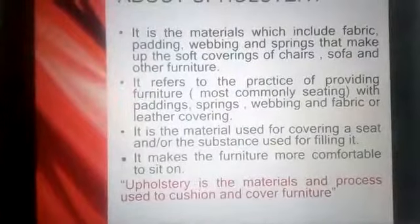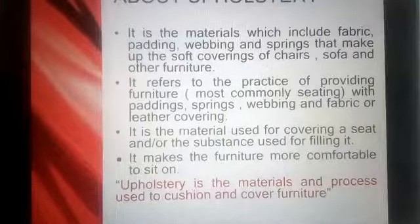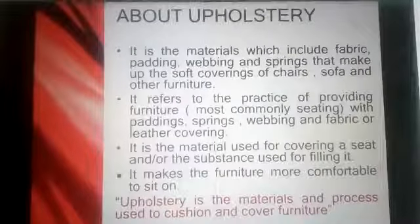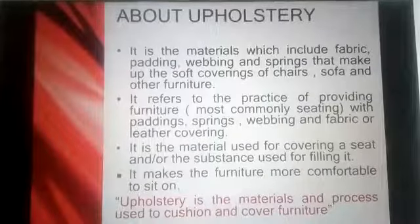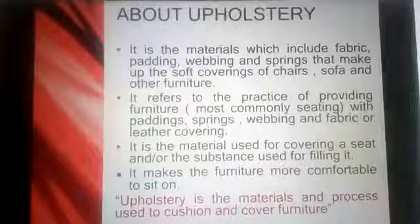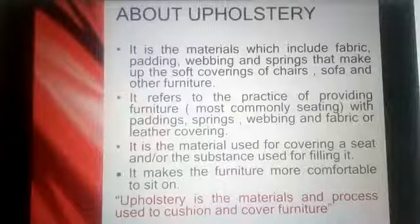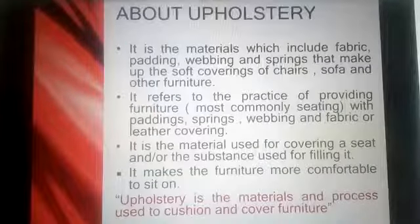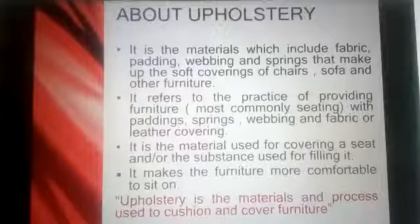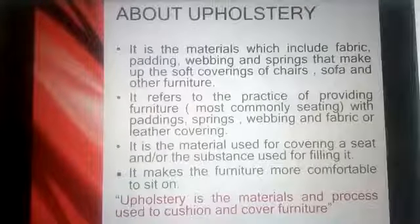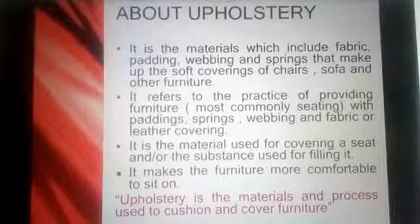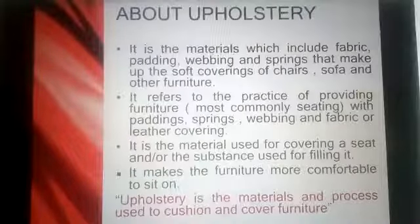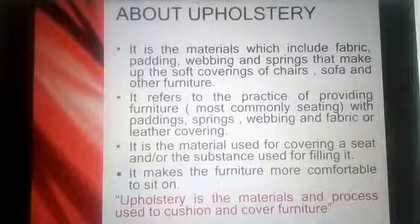Let's first understand what is upholstery. Upholstery refers to the materials which include fabric, padding, webbing, and springs that make up the soft coverings of chairs, sofas, and other furniture. It refers to the practice of providing furniture — most commonly seating — with padding, springs, webbing, and fabric or leather covering.